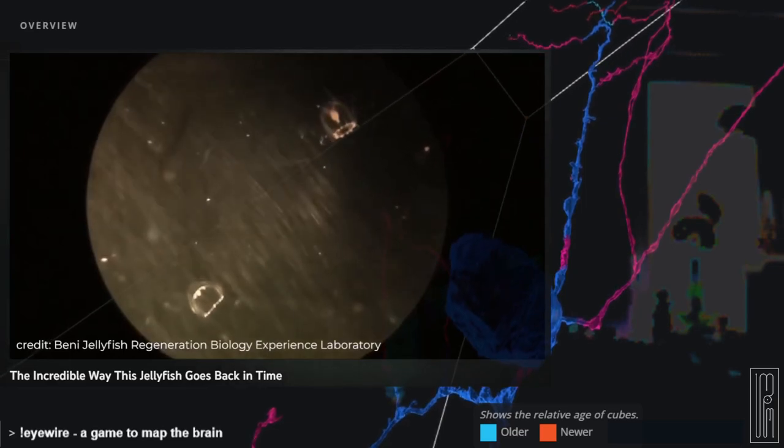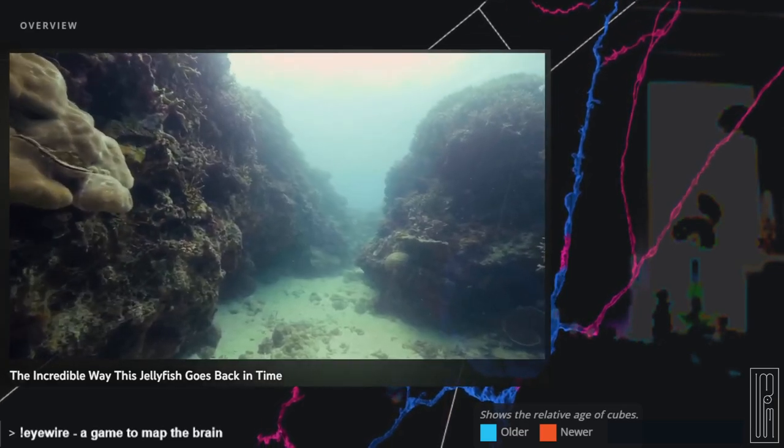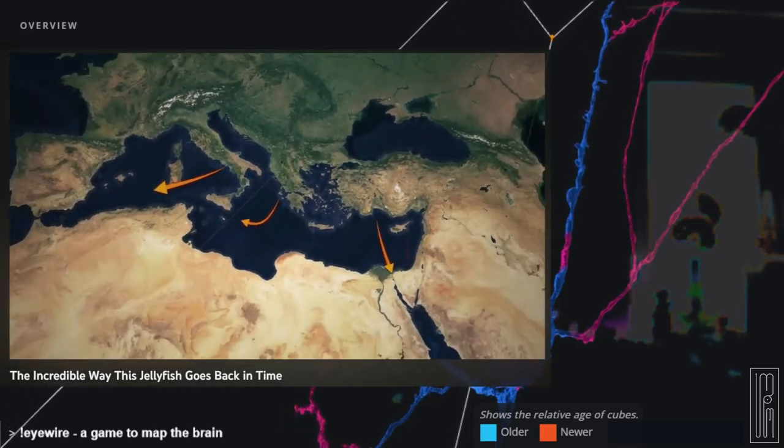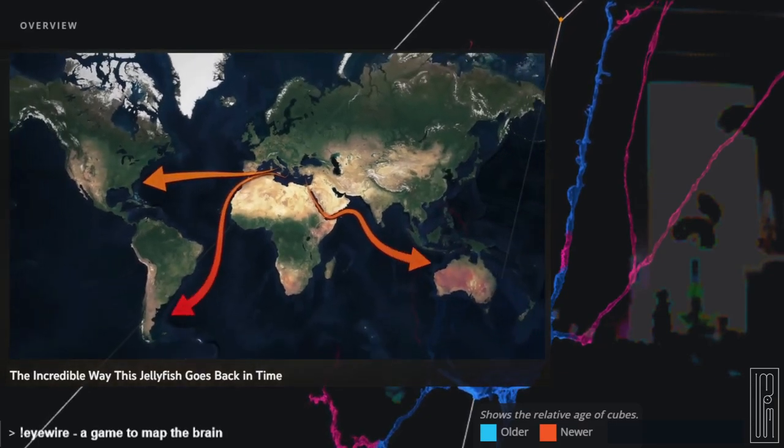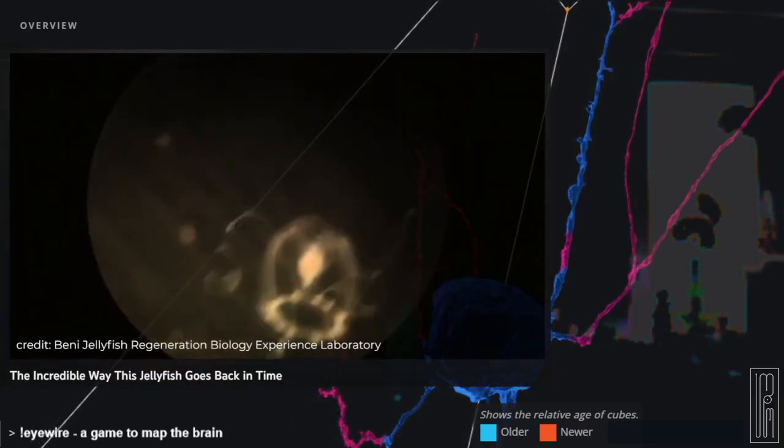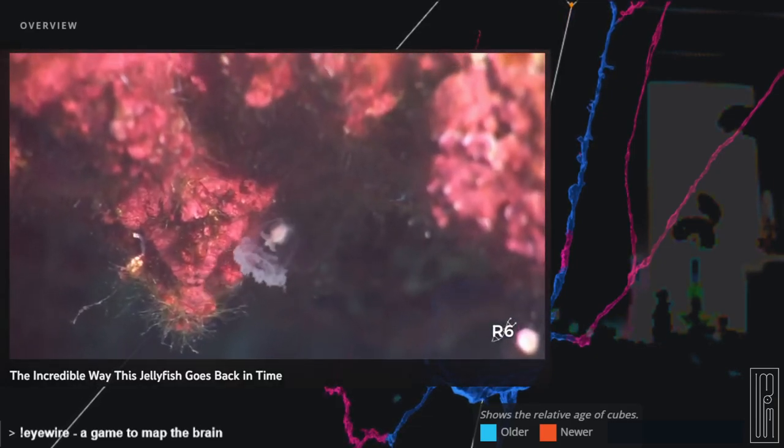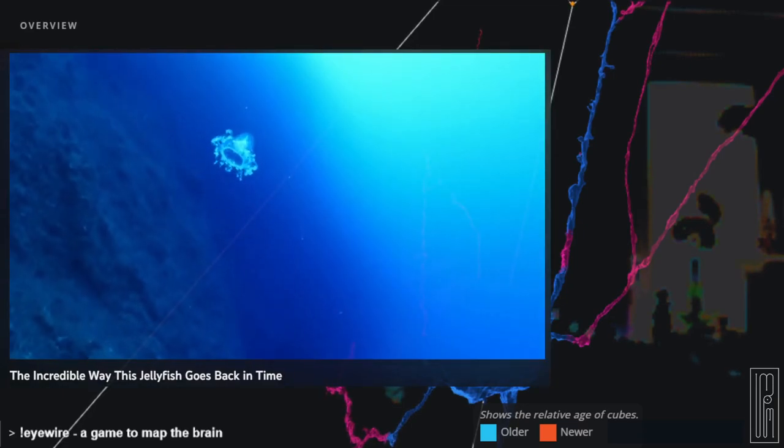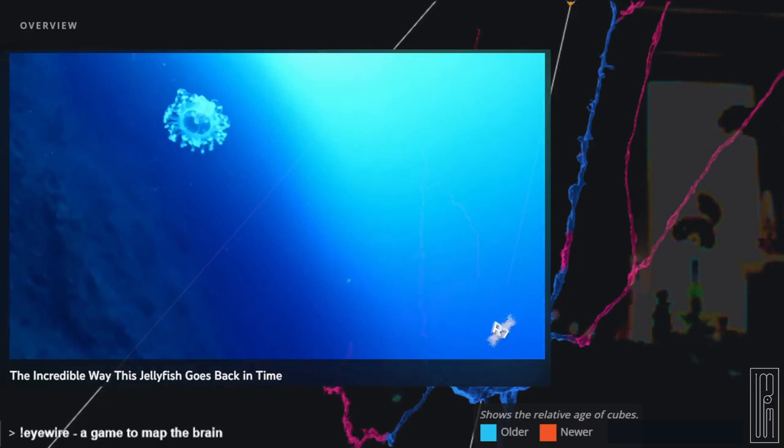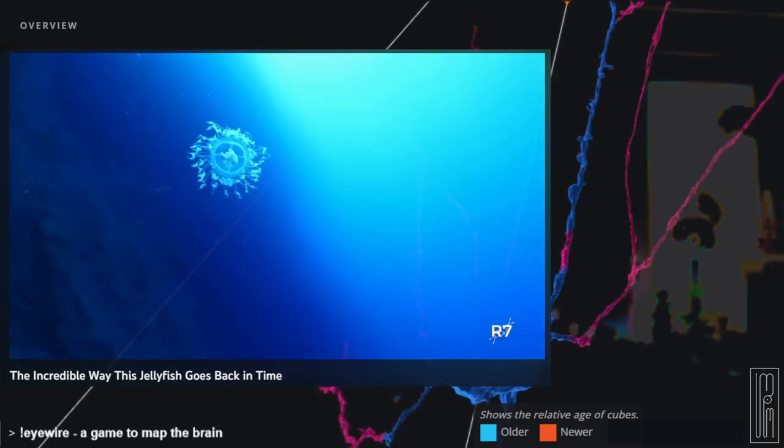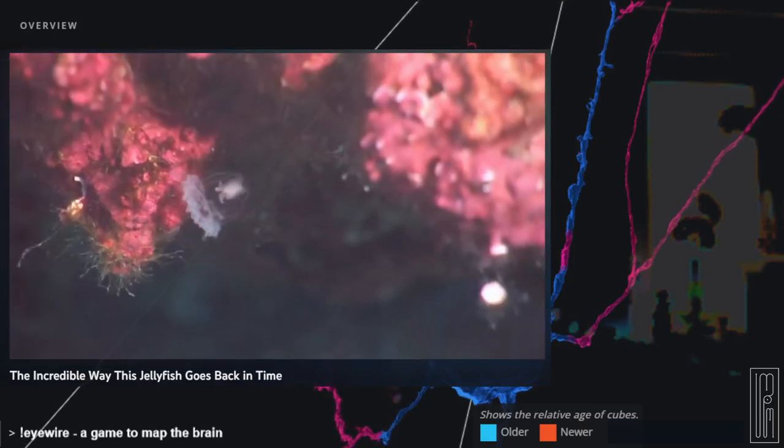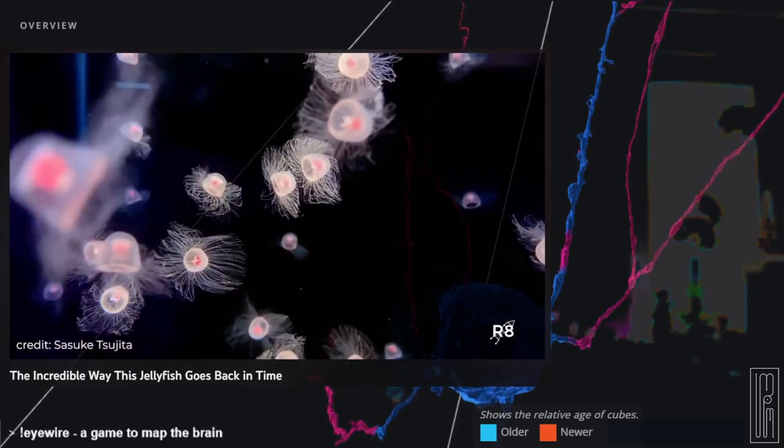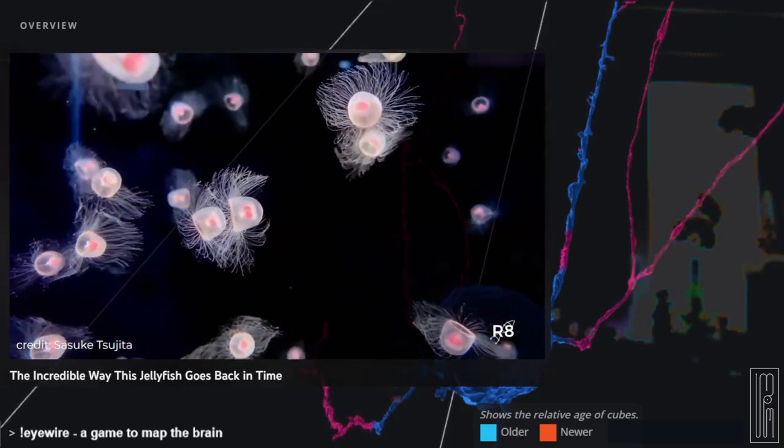This has worked well for Turritopsis dornii. It's fast taking over the world's oceans. Originally from the Mediterranean, it's believed that they have hitchhiked on boats and are now found almost everywhere. Their resilience has probably helped contribute to their ability to survive across long distances and lots of environments. In the wild, this could go on for much longer, possibly forever, in an eternal loop of back and forth transdifferentiations.